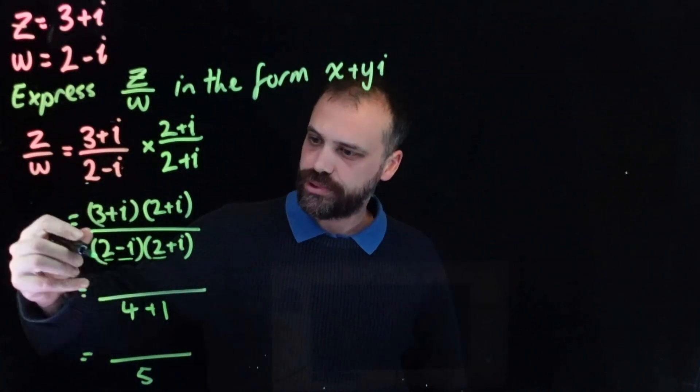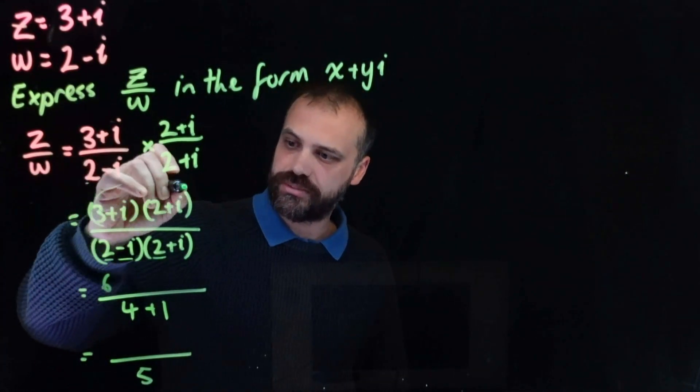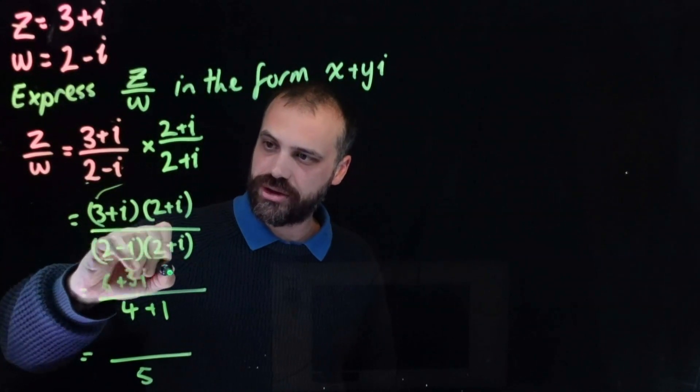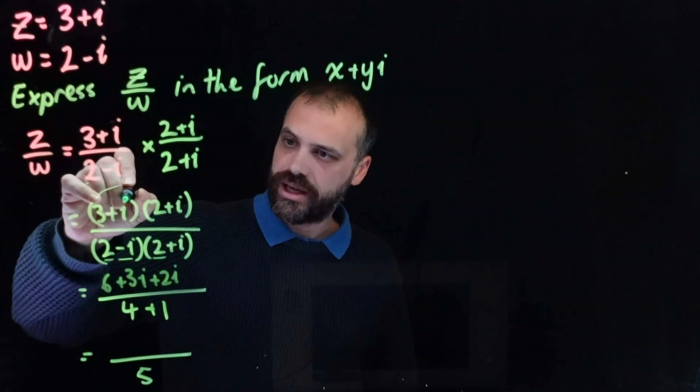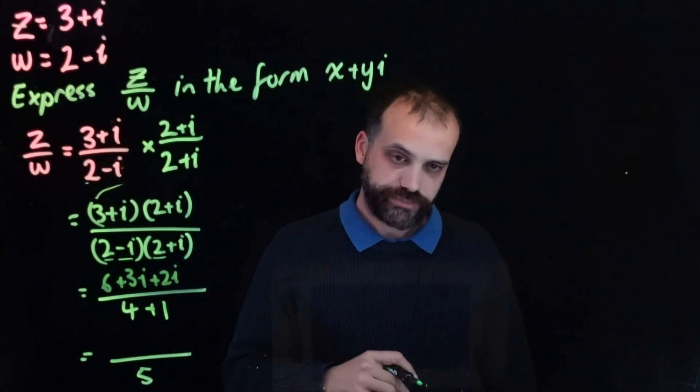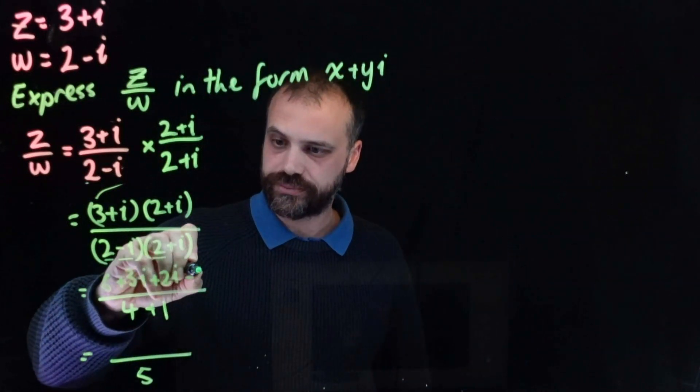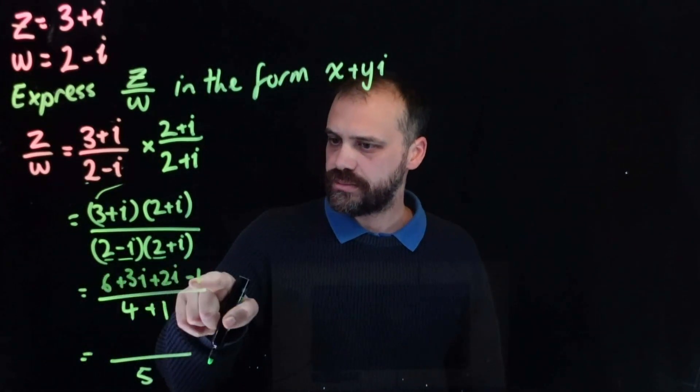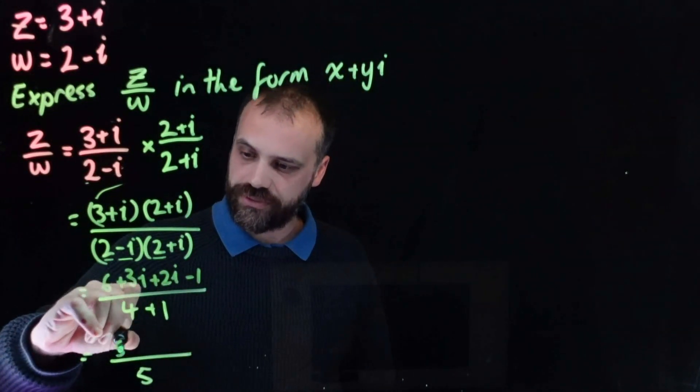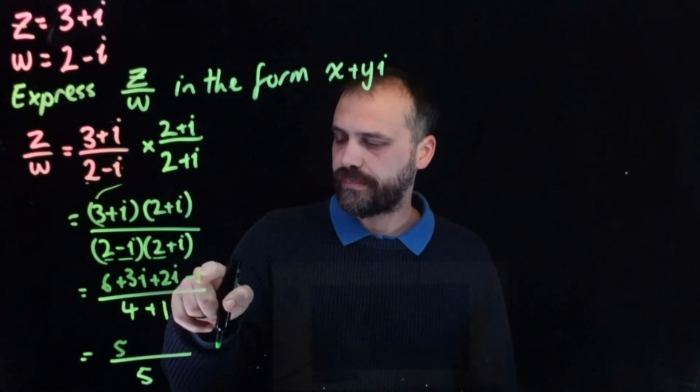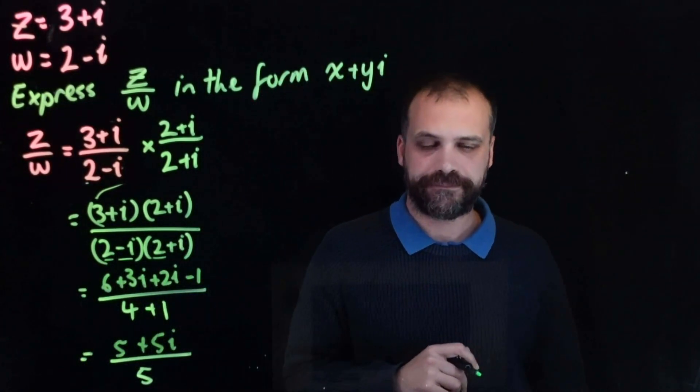Now, what about the top? 3 times 2 is 6, 3 times i is 3i, i times 2 is 2i, and i times i is i squared, which is negative 1. 6 minus 1, so now I'm grouping like terms. 6 minus 1 is 5, and 3i plus 2i is 5i.